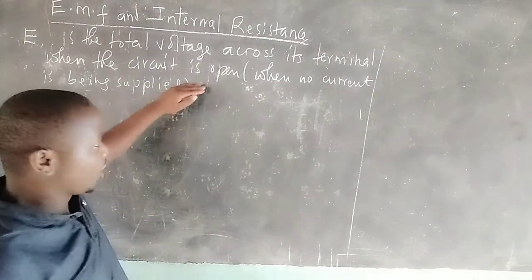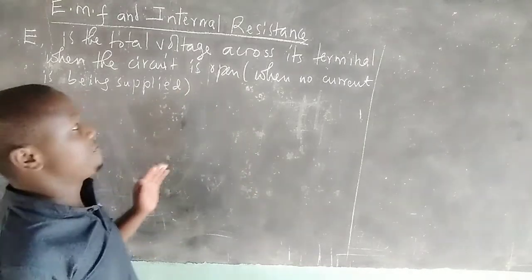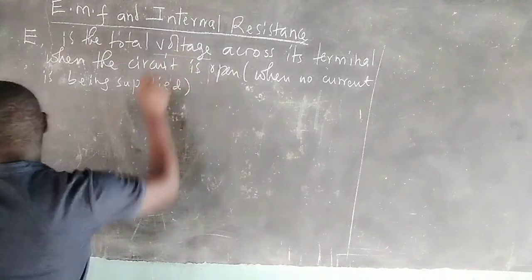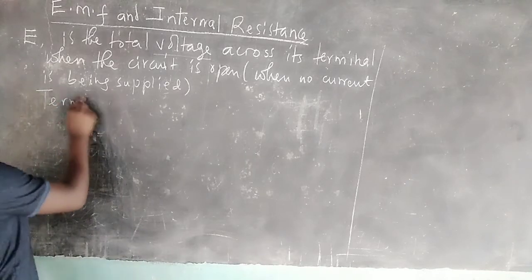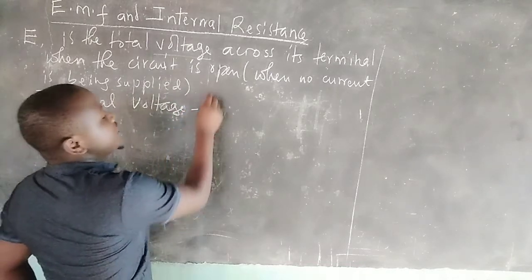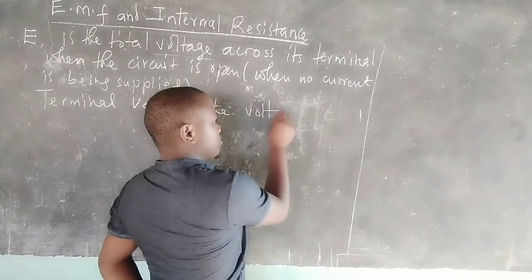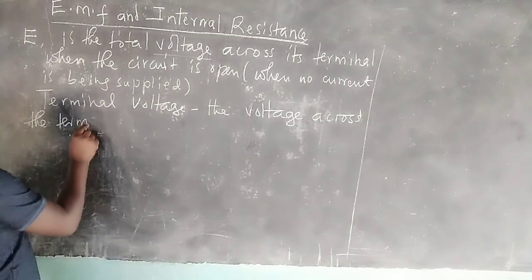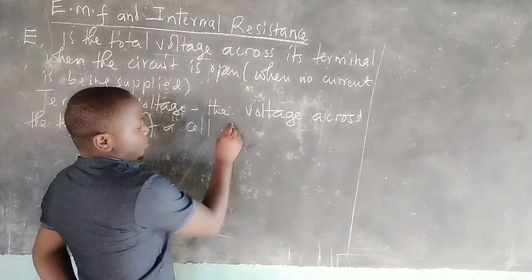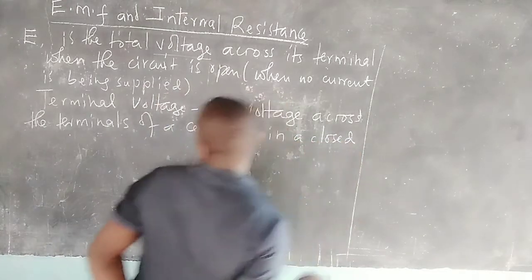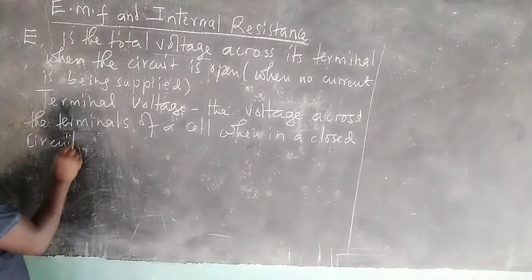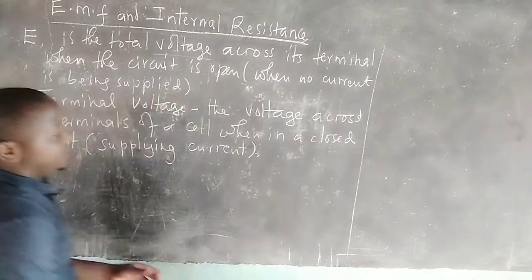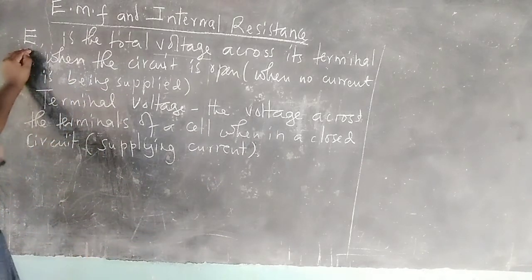When the cell is in a closed circuit, it starts supplying current and the voltage across its terminals reduces. This reduced voltage due to the supply of current is called terminal voltage. Terminal voltage is the voltage across the terminals or ends of a cell when it is in a closed circuit, or when the cell is supplying current. Therefore, the terminal voltage is a value lesser than the EMF of the cell.